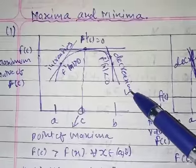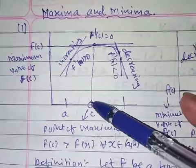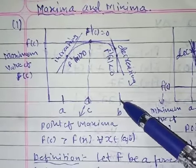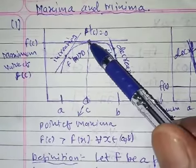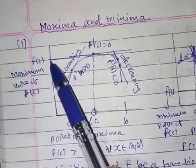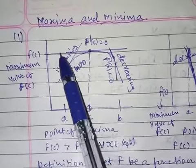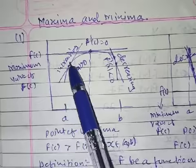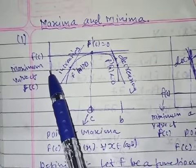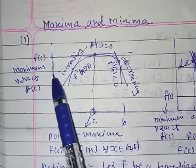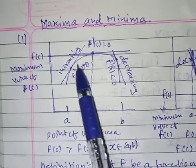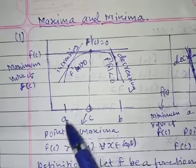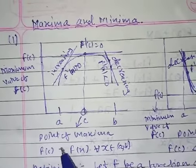Take a point c here, point a here, and point b here. Drawing the graph, we get f(c), f(a), and f(b). Drawing perpendiculars to the y-axis gives us f(a) and f(b). So f(c) is the maximum value.